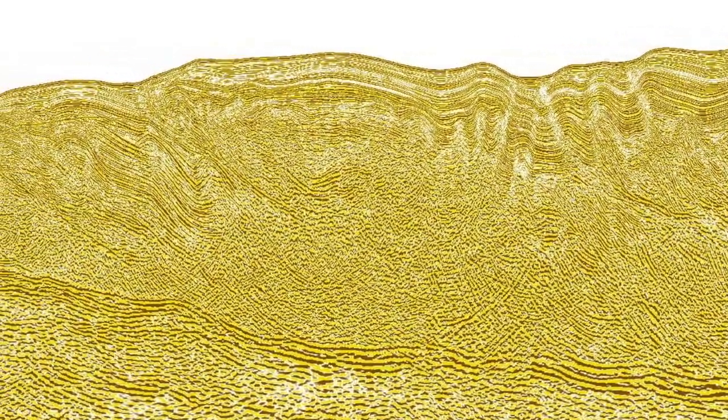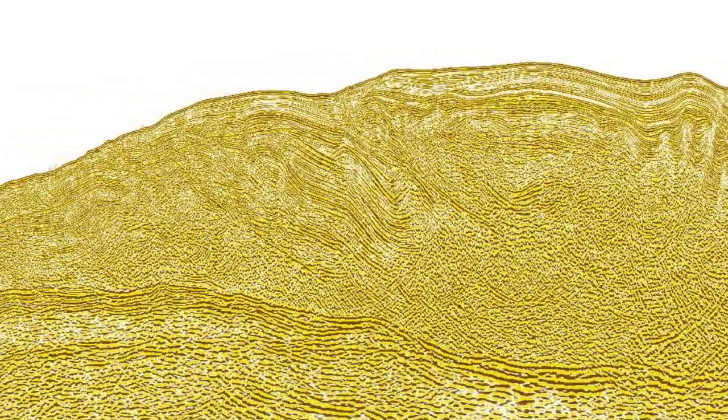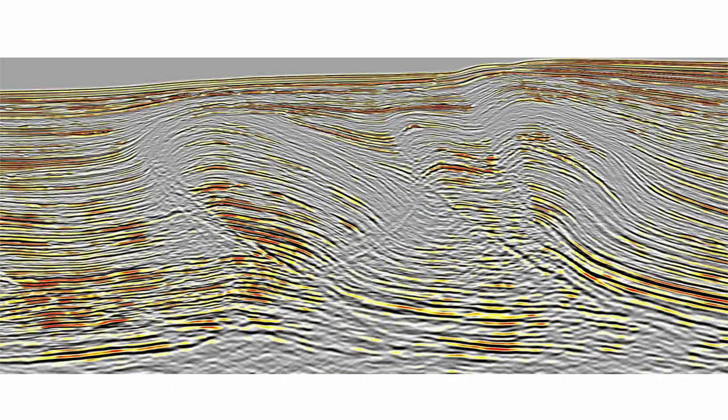Submarine thrust belts. These are important components of the structure of many continental margins, and they're not just found above subduction zones, but also at the toes of huge gravitationally collapsing sediment prisms.